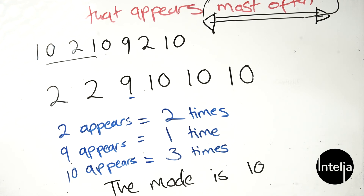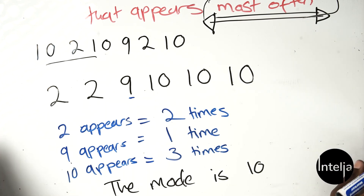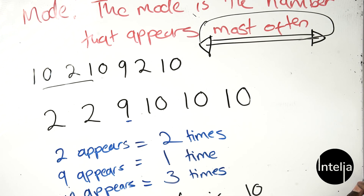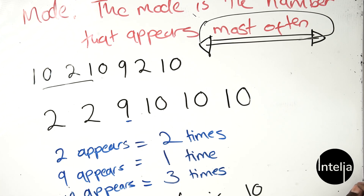Each and every time you're asked to find the mode, this is how you do it. The mode is the number that appears most often. We can't say two is the mode because it only appears twice, and nine appears once, but ten appears three times - so ten is the mode. This is all for mean and mode for today. Until we meet again in our next lesson, bye for now.